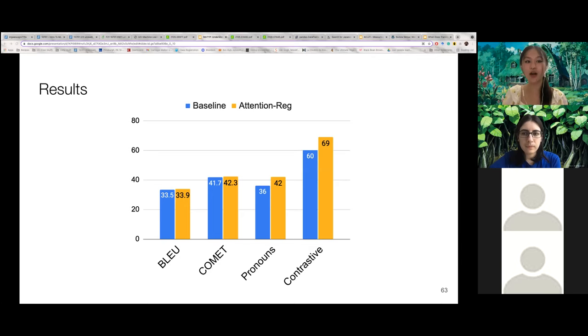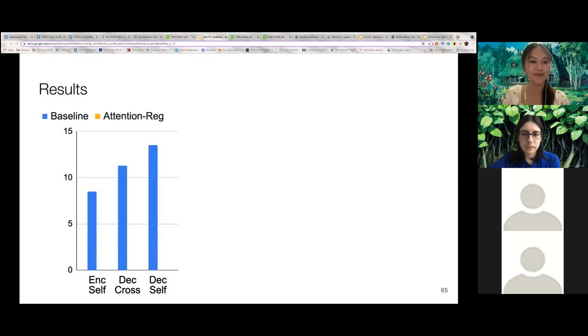And we find that attention regularization improves translation across all four metrics, especially the ones that are targeted to pronouns. Therefore, regularizing attention with SCAT can effectively improve ambiguous pronoun translation.